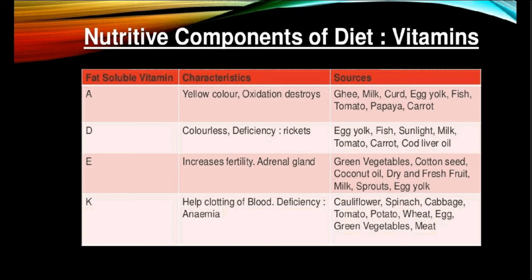The next fat-soluble vitamin is vitamin D. This vitamin is white and odorless. Vitamin D is helpful for the formation and maintenance of good teeth and healthy bones. It enables the body to accumulate calcium and phosphorus, which helps in the formation of bones. Deficiency of this vitamin causes rickets, ill-shaped teeth, and also softens the bones. The sources of vitamin D include egg yolk, fish, sunlight, vegetables, cod liver oil, milk, cream, butter, tomato and carrot.